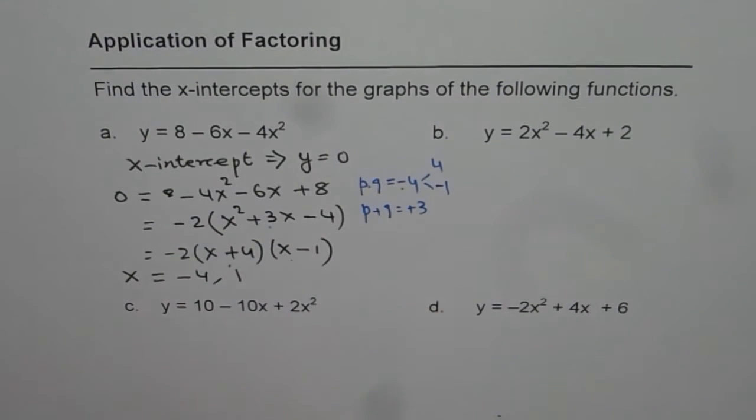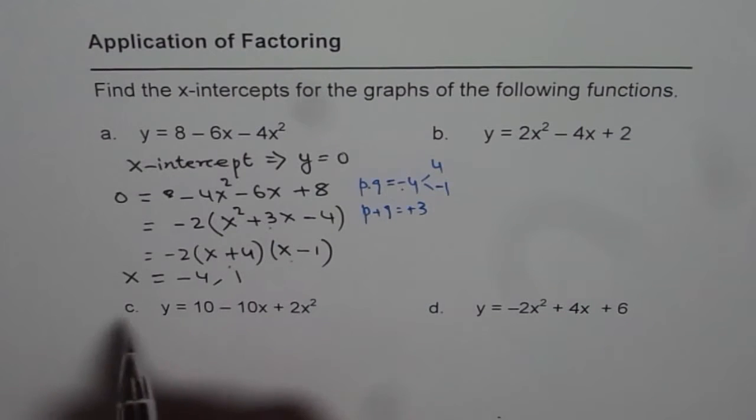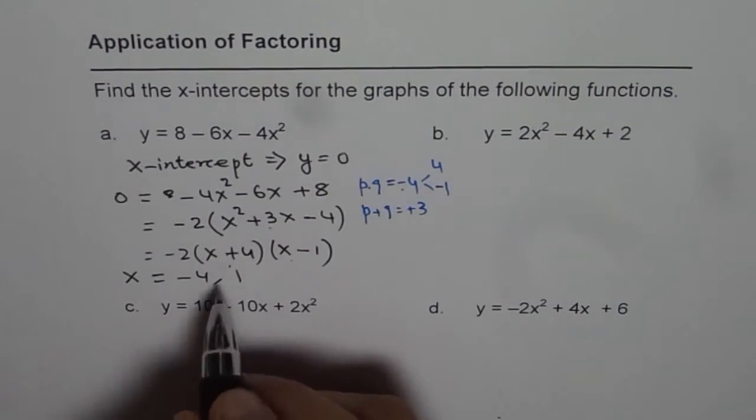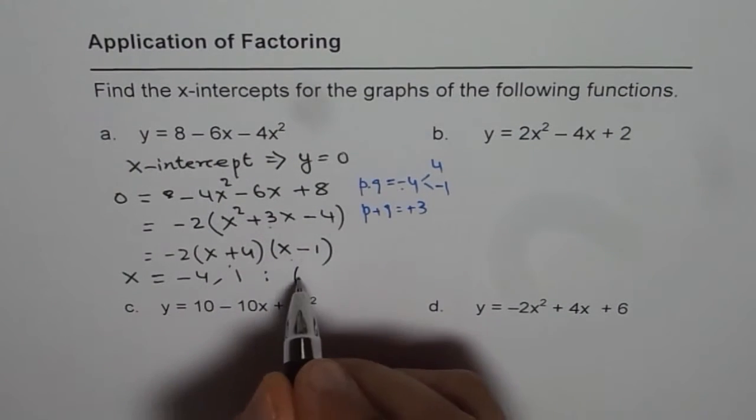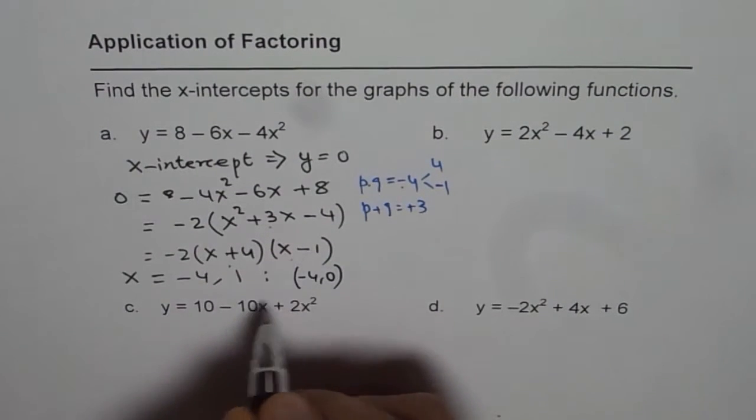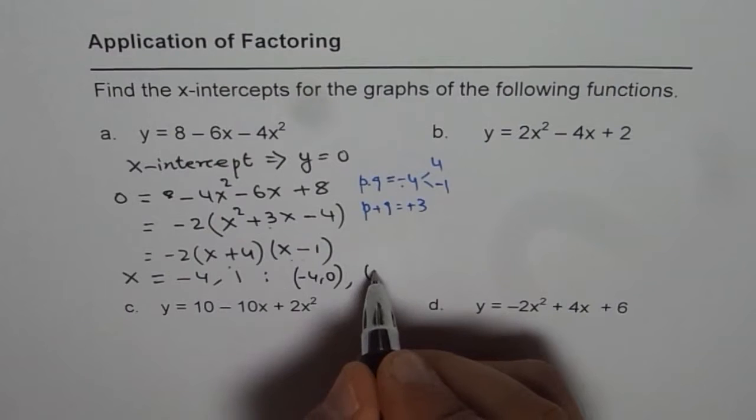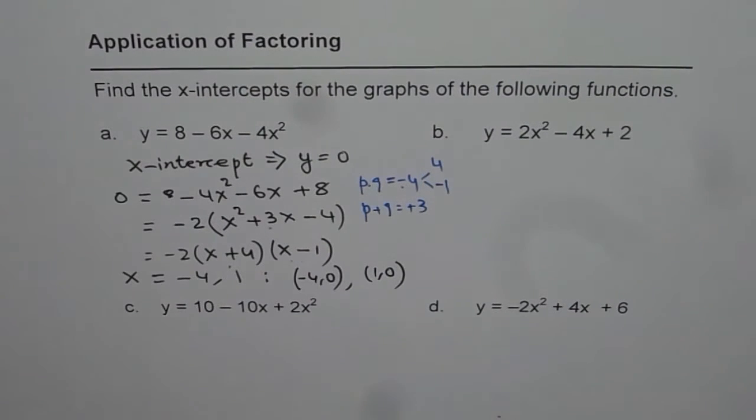That is the solution for us for this equation. So the x-intercepts are at x equals to minus 4 and at 1. The coordinate points will be at minus 4 to 0 and at 1 also y value 0. So 1 and 0, those are the coordinates for the x-intercepts. So that is how we solve it.